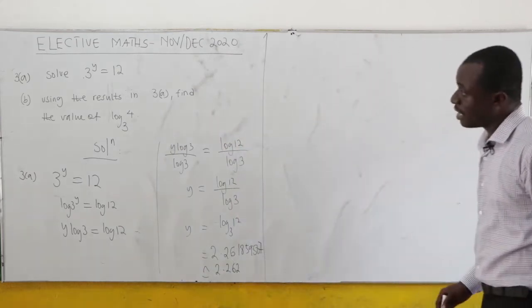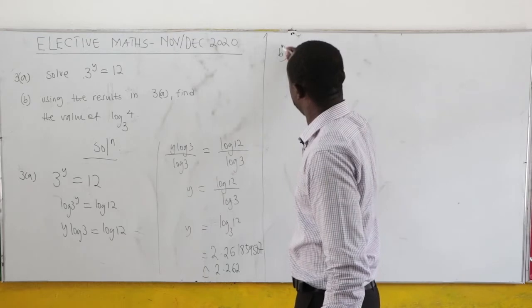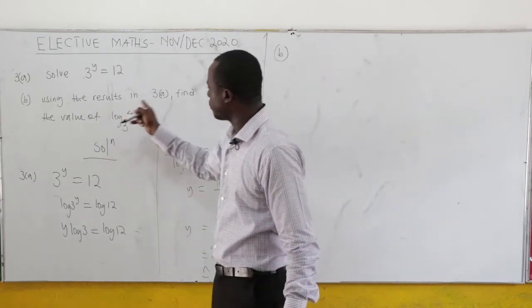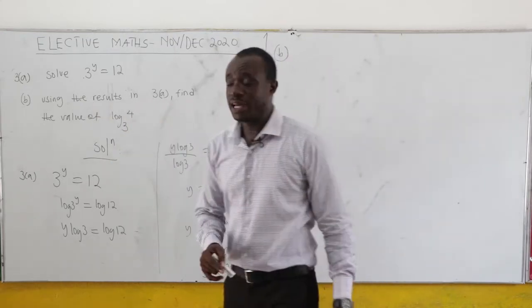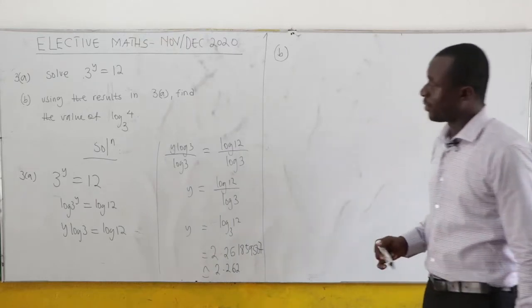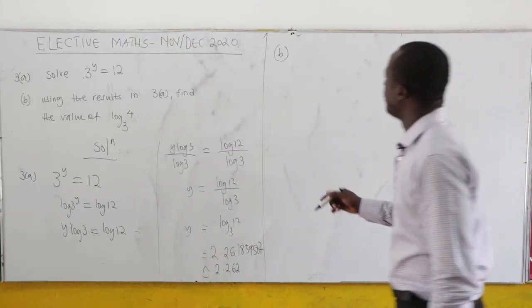So this is our y. Now, part b says that using the result in 3a, find the value of log₃4.